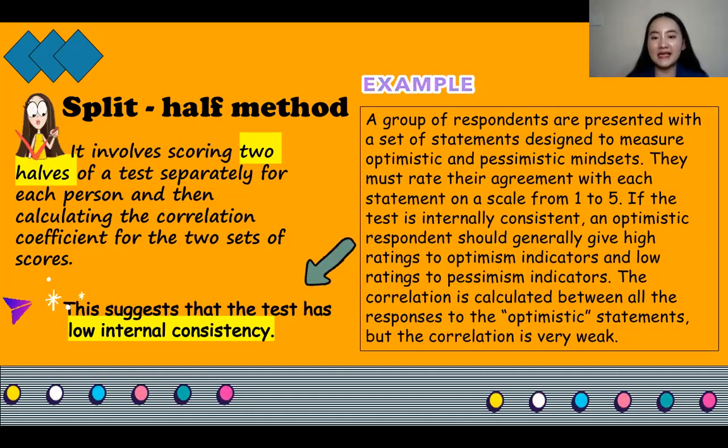So if the test is internally consistent, an optimistic respondent should generally give higher ratings to optimism indicators and low ratings to pessimism indicators. So that correlation is calculated between all the responses to the optimistic statements, but the correlation is very weak. So in that case, it suggests that the test has low internal consistency.